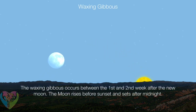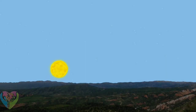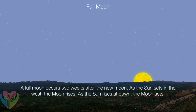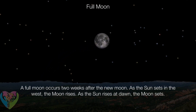The waxing gibbous occurs between the first and second week after the new moon — the Moon rises before sunset and sets after midnight. A full moon occurs two weeks after the new moon. As the Sun sets in the west, the Moon rises. As the Sun rises at dawn, the Moon sets.